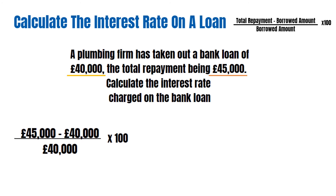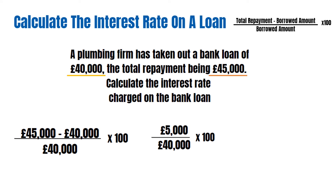Let's put that into the formula. If you'd like to pause the video, you can do so and work out the answer. So: £45,000 minus £40,000, divided by £40,000, times by 100. This gives us £5,000 divided by £40,000, times by 100. The interest rate on this loan is 12.5%.